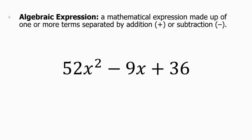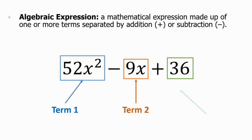An algebraic expression is made up of one or more terms separated by addition or subtraction. So 52x squared is the first term of that expression separated by the minus before 9x. 9x is our second term separated by a plus, while 36 is our third term. So 52x squared minus 9x plus 36, the whole thing is known as an algebraic expression.